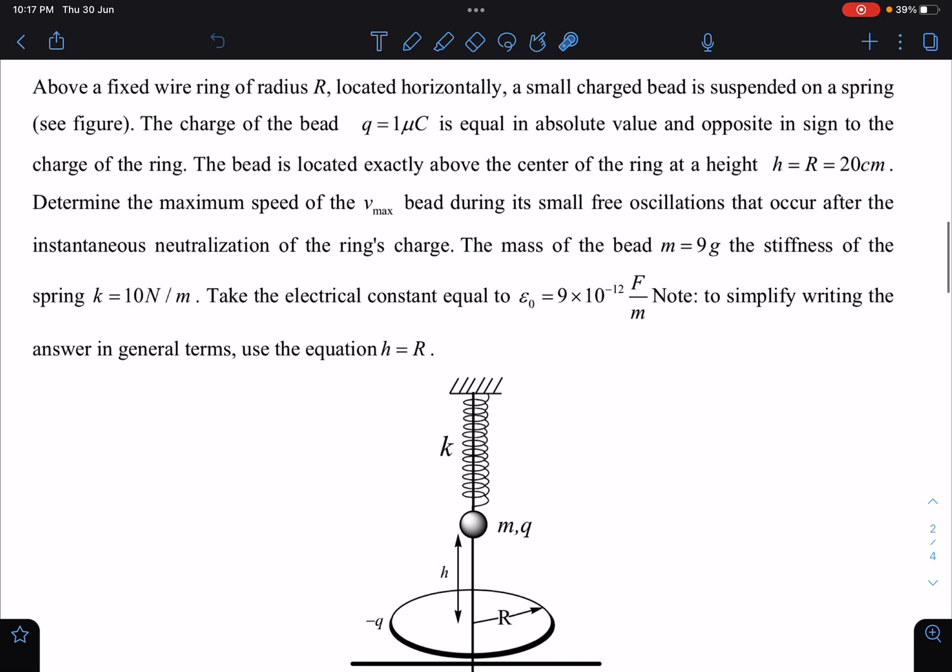So guys, here is the problem statement: Above a fixed wire ring of radius R, it is connected with a spring. A charged particle is given with mass m, charge q, and a negatively charged ring is given, and it is connected to the spring.